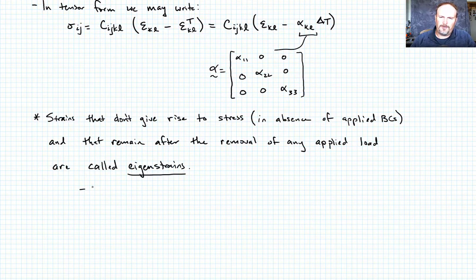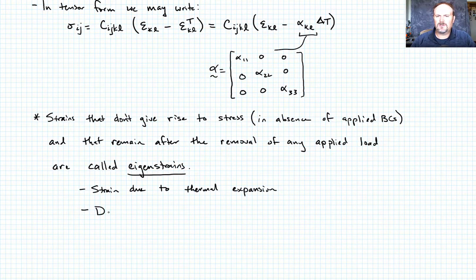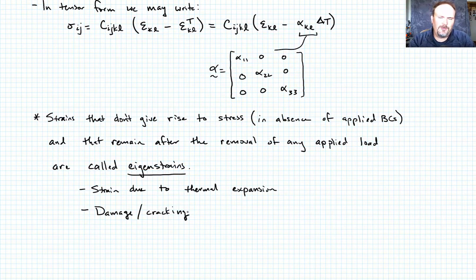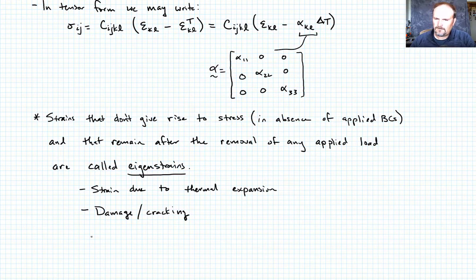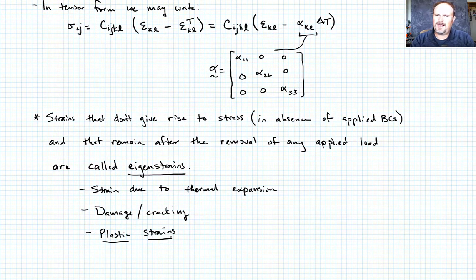There are a few classes of eigenstrains. Obviously, strain due to thermal expansion fits this. Another source of eigenstrain is damage or cracking — if we have a cracked material and unload it, there are sometimes still strains even though there aren't any stresses. And finally, the one that's important for us is plastic strains — that's how plasticity is linked and why we care about this concept.